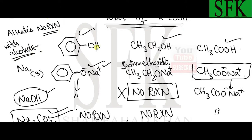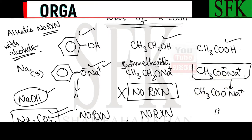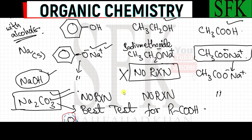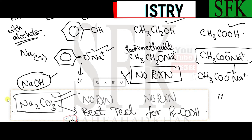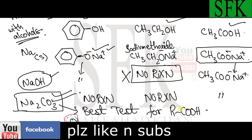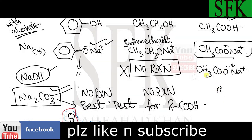This is a very important point: alkali has no reaction with alcohols. Alkali will react with carboxylic acid to give sodium ethanoate. The third and final reagent is sodium carbonate. Sodium carbonate has no reaction with phenol, nor with ethanol — it only reacts with ethanoic acid to give sodium ethanoate. Therefore, sodium carbonate is the best test for carboxylic acids, as it distinguishes them from phenols and alcohols.